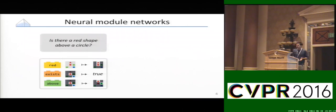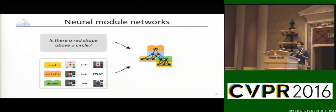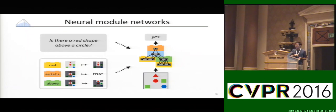At a very high level, our model is going to work in the following way. When we see a new question, like 'is there a red shape above a circle here,' we're going to take a syntactic analysis of that question and use it to build up a question-specific neural network on the fly from a collection of little network fragments that we call modules. We're then going to take that network that we've dynamically constructed and apply it to our input image in order to produce an answer to the question.